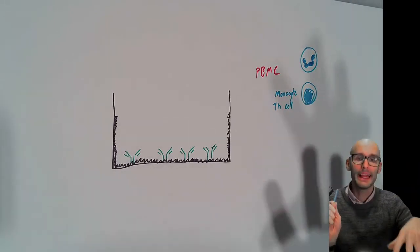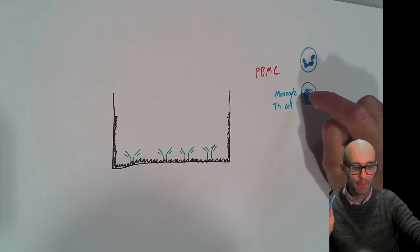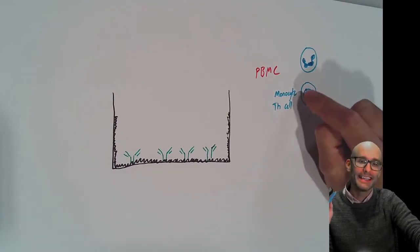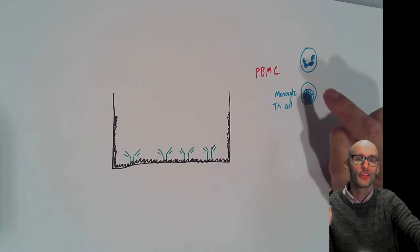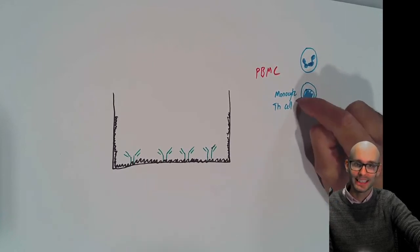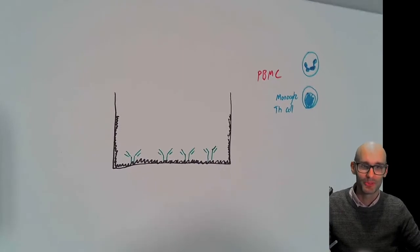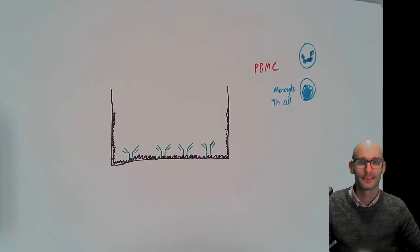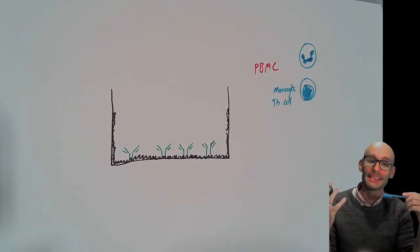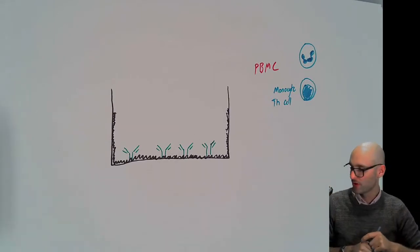So we take out our PBMCs. Importantly, PBMCs will contain monocytes, and monocytes can antigen-present — they have MHC2 and are professional antigen-presenting cells. Then we have the T helper cells, which contain the T cell receptor. So we've got a mixture of those two cell types.